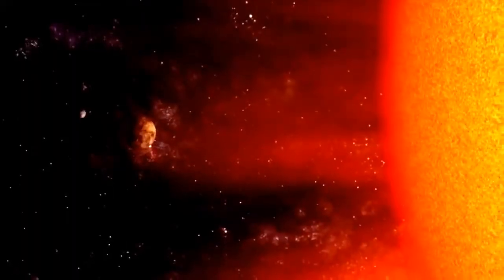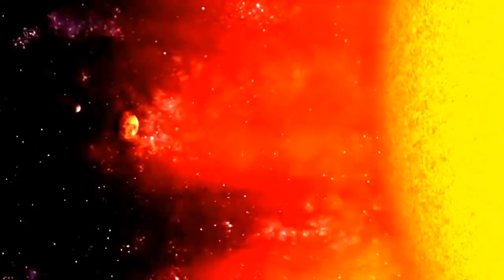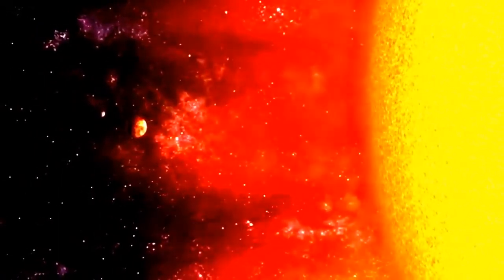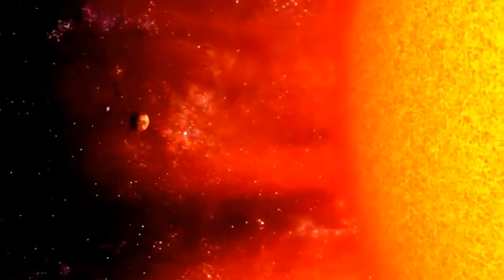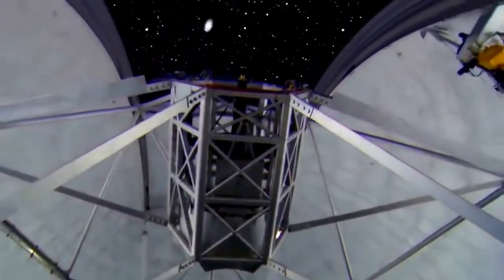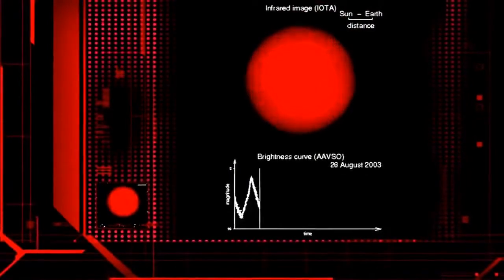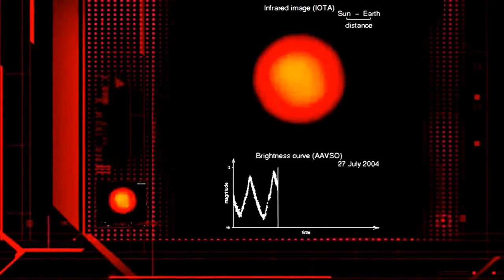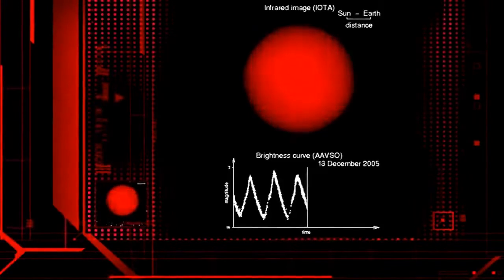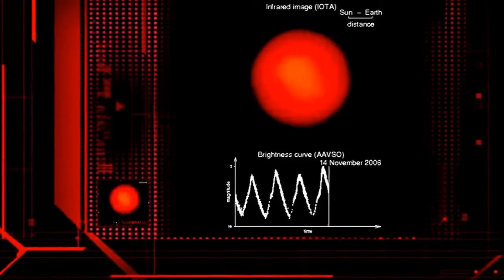When the sun becomes a red giant, it will expand out and the first thing it'll do is engulf the planet mercury and eventually incinerate it, eat it up. Then it'll expand out to venus. Mercury and venus are doomed. However, there's been some debate in the scientific literature as to whether the earth would actually be engulfed or not. Earth's future is uncertain because it lies on the borderline between being engulfed and surviving.